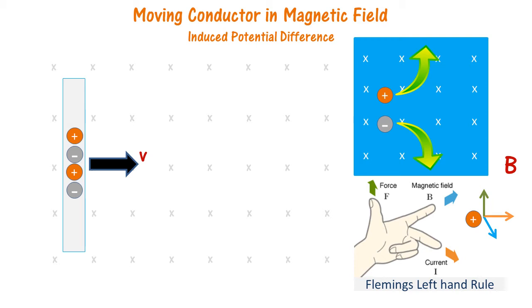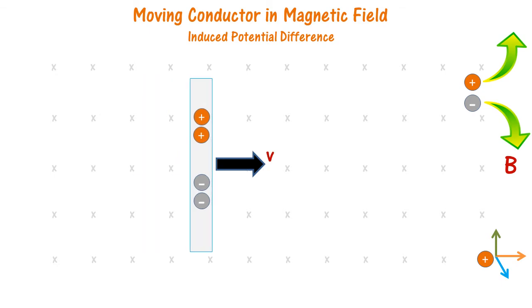Now let us start moving the rod. The positive charges start to move up because of the upward force, and the free electrons start to move down.